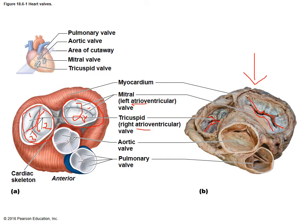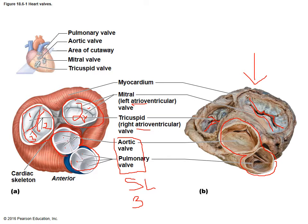The semilunar valves always have three cusps each. Notice how they sit one behind the other, which is why during a heart dissection, if you make a traditional cut through the heart, you'll usually only see one semilunar valve at a time — you'll have to dig behind it to find the other one. So in summary, four valves total: two atrioventricular valves between the atrium and ventricle, and two semilunar valves regulating blood flow from the ventricle to the exit arteries.